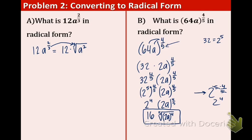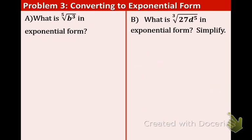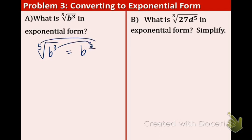I know this is challenging, so just bear with me. We're getting through this and I'll help you during class. What is the 5th root of b to the 3rd in exponential form? The number inside goes on top and the number outside goes on the bottom, so the answer is b to the 3/5.